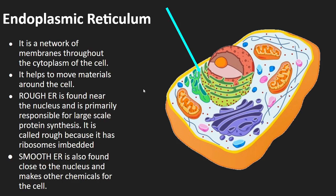The endoplasmic reticulum, or ER, basically makes materials and chemicals for the cell. There are two types. If the ER is covered in ribosomes, it's called rough ER and it makes proteins, because ribosomes make proteins — it's a protein-making factory. Another type is called smooth ER, which makes the other chemicals the cell needs besides proteins — it looks very similar to rough ER but just doesn't have ribosomes on it. The rough ER wraps itself around a large portion of the nucleus because these two things work together most closely. The smooth ER isn't too far away, but doesn't need to be quite as close.